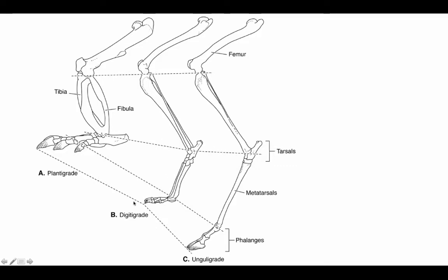In digitigrade posture, used by cats, dogs, and many other cursorial species, one of those lower segments is incorporated into the functional leg. The metatarsals are up off the ground, becoming part of the functional leg — elongated, increasing overall limb length. This is like a beginning ballerina posture, up on tippy-toes, but with the phalanges still in contact with the ground forming the functional foot.